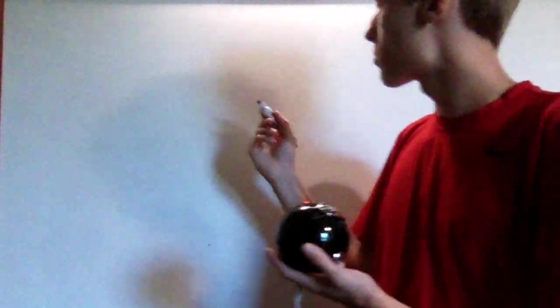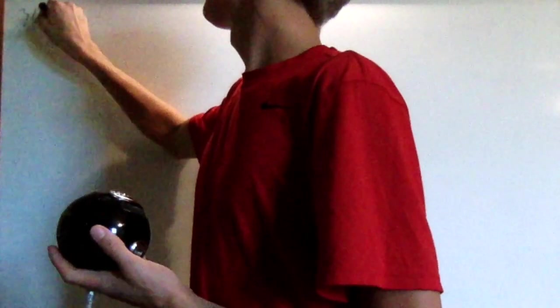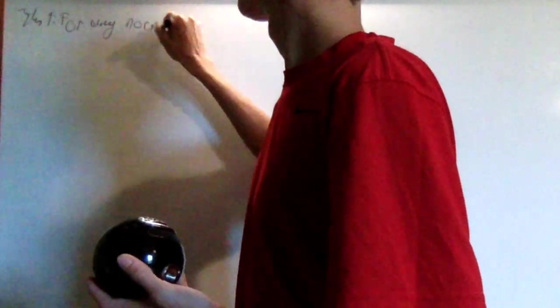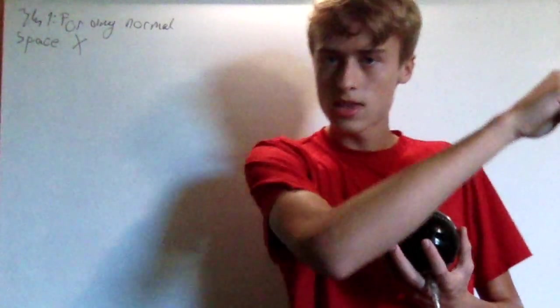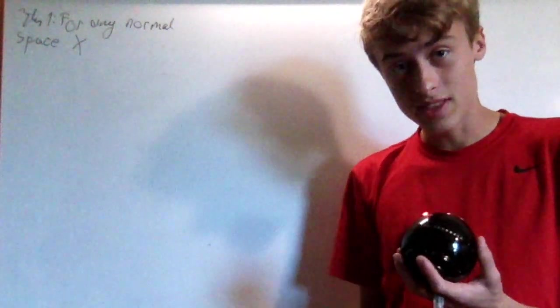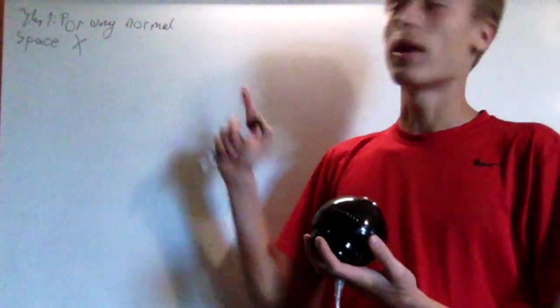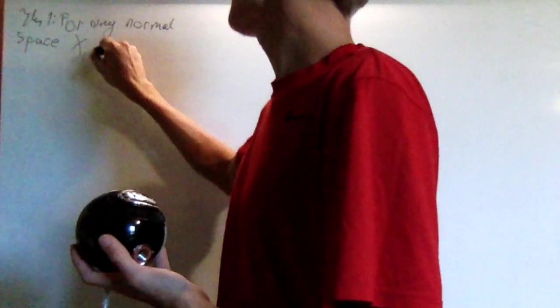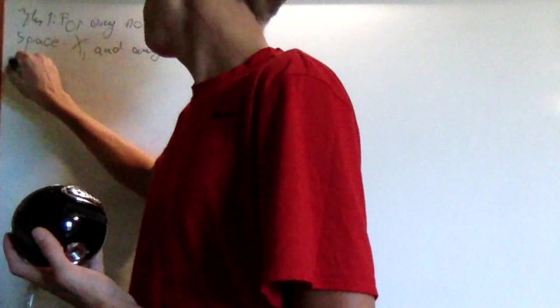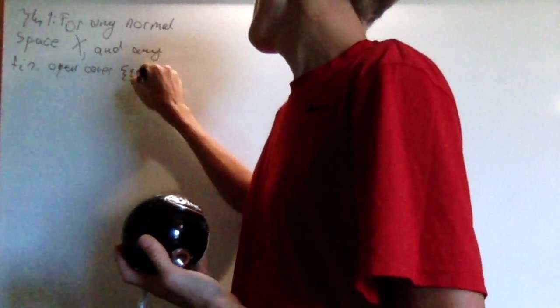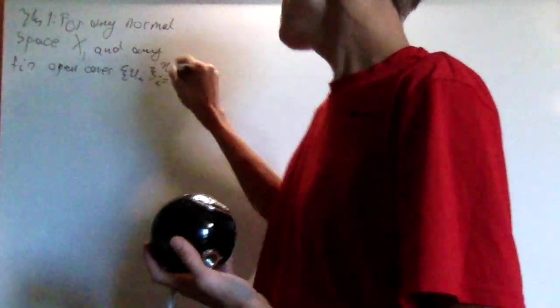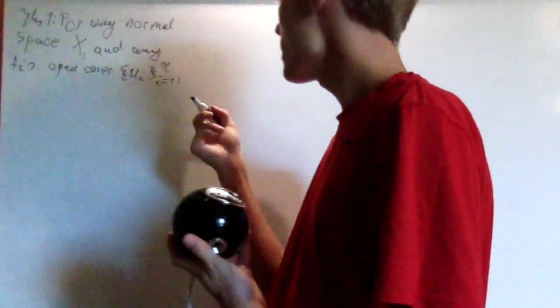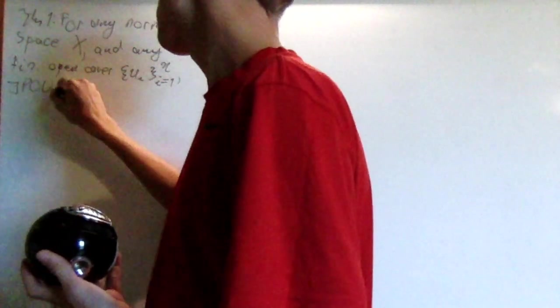Now this is the theorem that we're eventually going to want to prove. It's that for any normal space - if you don't know what a normal space is, it'll be in the I card up there when I make the video - for any normal space x and any finite open cover ui from i equals one to n, there exists a partition of unity subordinate to it. And that's the theorem we're going to prove.